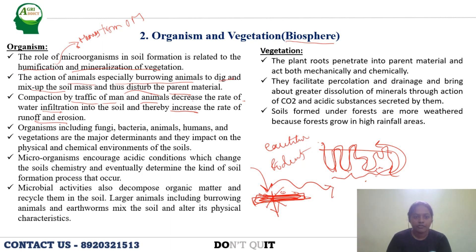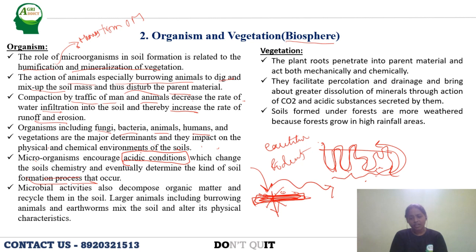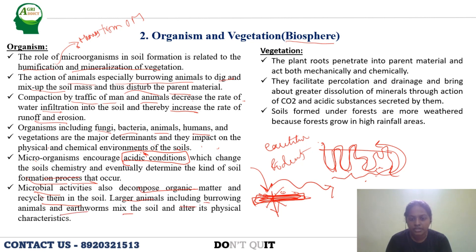Organisms including fungi, bacteria, animals, and vegetation are the major determinants impacting the physical and chemical environment of soil. Microorganisms encourage acidic conditions which change the soil chemistry and eventually determine the kind of soil formation process that occurs. Fungi generate acidic conditions through organic acids. Microbial activities also decompose organic matter and recycle nutrients in the soil. Larger animals including burrowing animals and earthworms mix the soil and alter its physical characteristics.